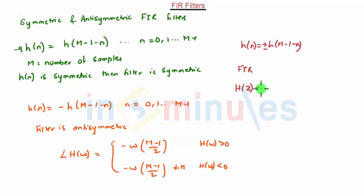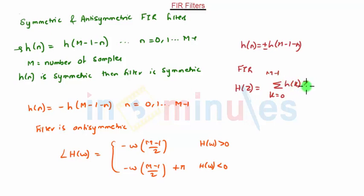The FIR filter can be characterized by the equation H(z) = Σ(k=0 to M-1) h(k) z^(-k). Here M is the length of the filter and M-1 is the order of the filter.